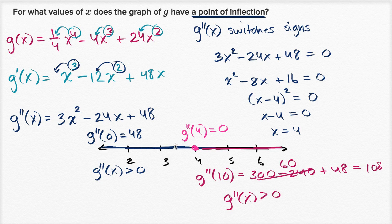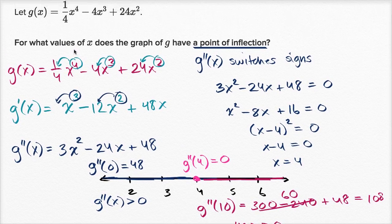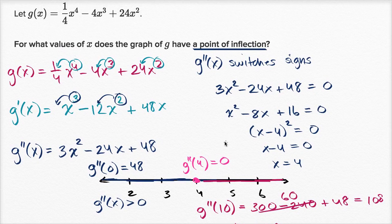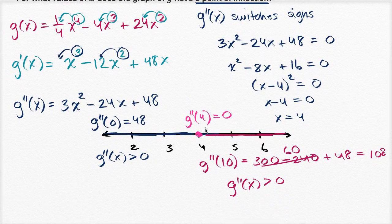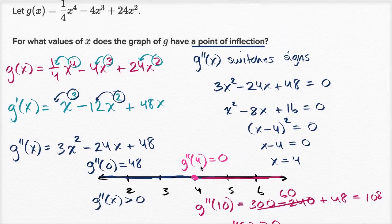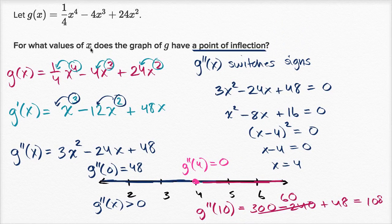And so, and that was the only potential candidate. So there are no values of x for which g has a point of inflection. X equals four would have been a value of x at which g had a point of inflection if the second derivative switched signs here. If it went from positive to negative, or negative to positive, but it's just staying from positive to positive. So the second derivative is positive, it just touches zero right here, and then it goes positive again. So going back to the question, for what x values does the graph of g have a point of inflection? No x values!